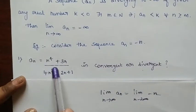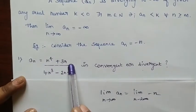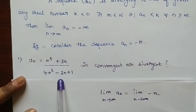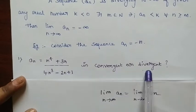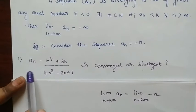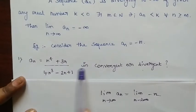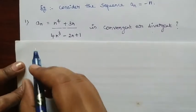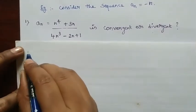Then we see one problem regarding divergent sequences. Given AN equal to N⁴ plus 3N divided by 4N³ minus 2N plus 1. They are asking whether it is convergent or divergent. If the Nth term is not given and only the sequence is given, we want to find the Nth term first, and then determine if it is convergent or divergent. Now we can solve this problem.